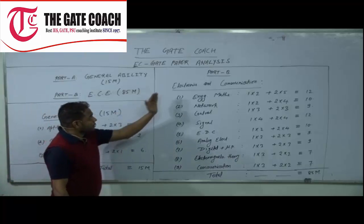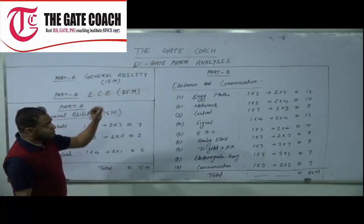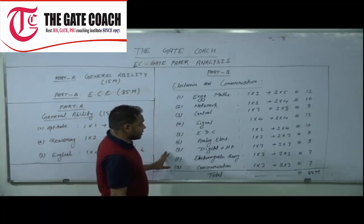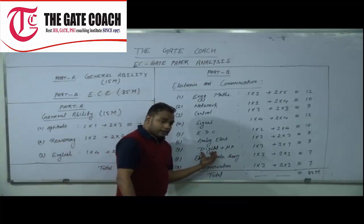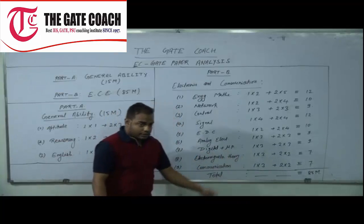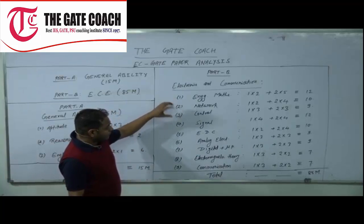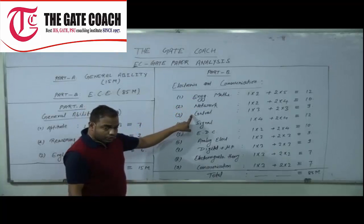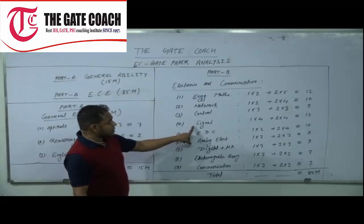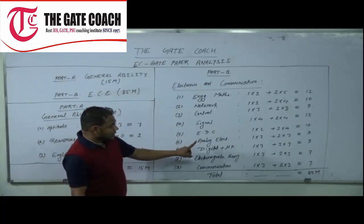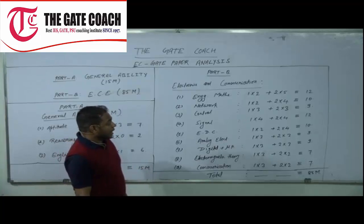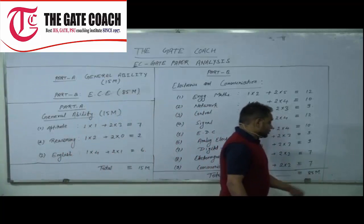Now coming to the electronics and communication side — Part B of the GATE paper. We have 9 subjects: engineering mathematics, network theory, control system, signals and systems, electronic devices and circuits, analog electronics, digital electronics, electromagnetic theory, and communication systems. This part consists of 85 marks.